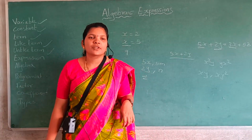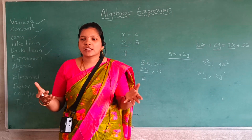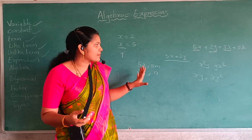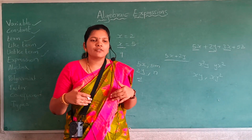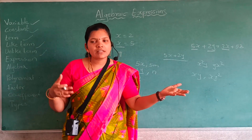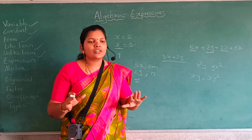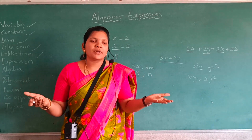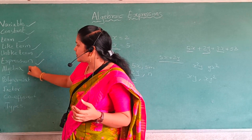Now we learn what is an expression. Expression is something which we express — what we want to tell. That is called expression. As I mentioned before with 5 erasers and 2 pens, the sum of 5 erasers and 2 pens is our expression. The combination of what we want to express is called an expression.